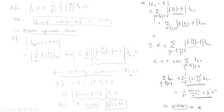Since f is continuous on [0,1], it is uniformly continuous: for any ε > 0, we can choose δ such that |x - y| < δ implies |f(x) - f(y)| < ε. Also, since f is continuous on [0,1], it is bounded by some constant M. We split the sum into two parts: cases where |x - k/n| < δ, and cases where |x - k/n| ≥ δ.